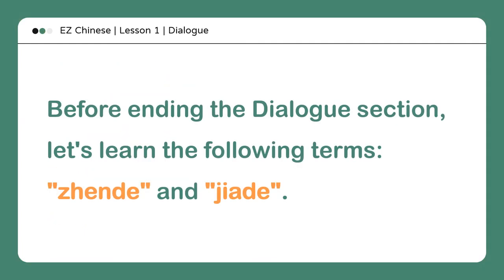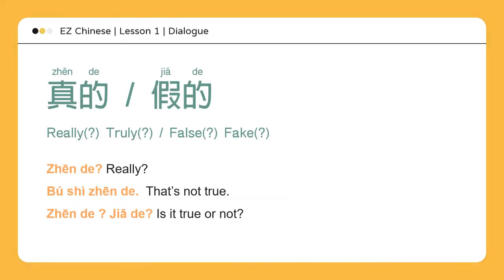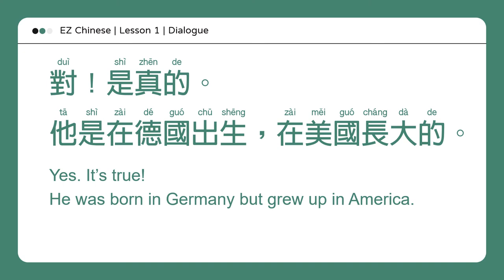Before ending the dialogue section, let's learn the following terms: 真的 and 假的. 真的 — really? 不是真的 — that's not true. 真的，假的 — is it true or not? 对，是真的 — yes, it's true. 他是在德国出生，在美国长大的 — he was born in Germany but grew up in America.